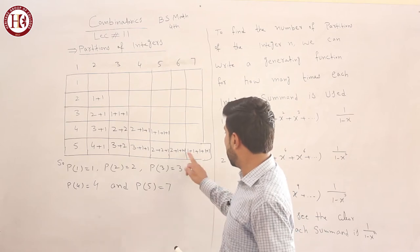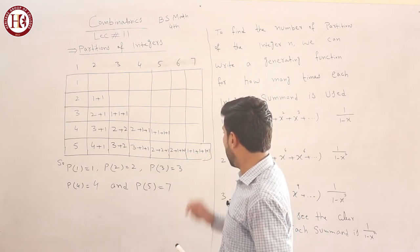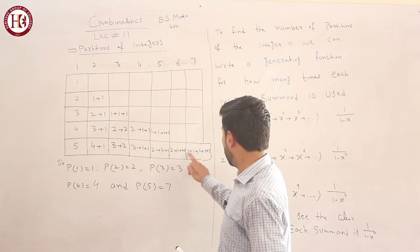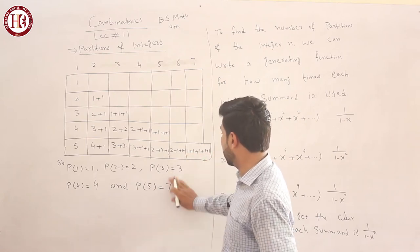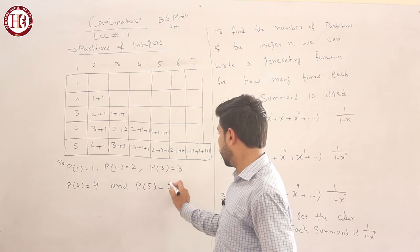Then for 5, if you look at it, this is 1, 2, 3, 4, 5. So this is 5 ways. What will P(5) be? It will be 5.